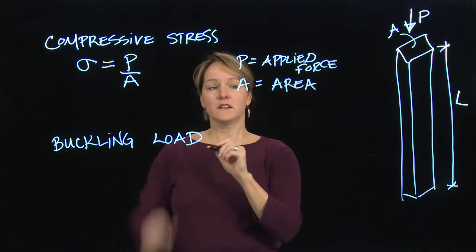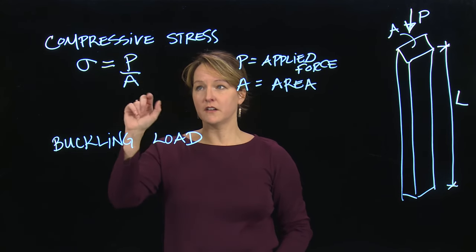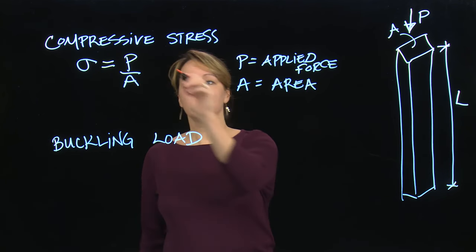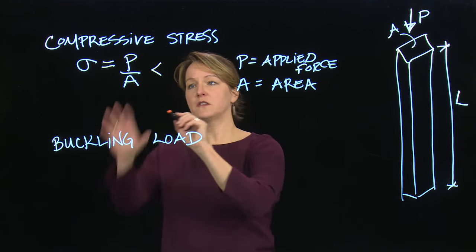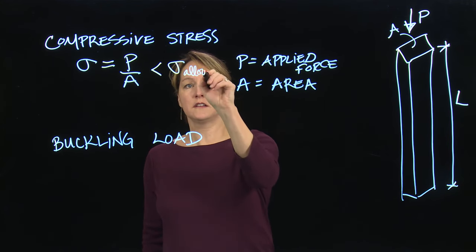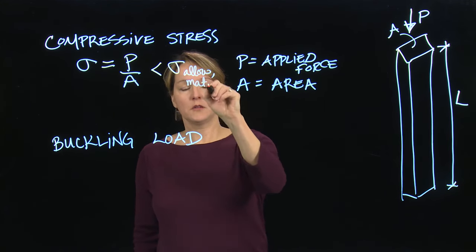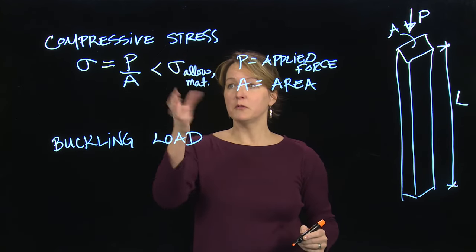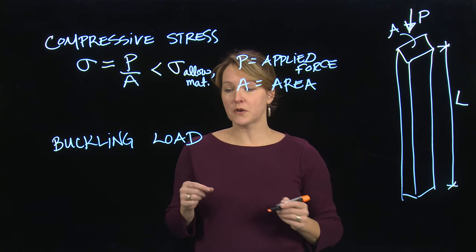We calculate this value. So for a given column, we'll typically know the cross-sectional area. And we'll know the applied force. And we'll know the material. Or we'll be designing the material. So I want to keep this stress less than the allowable stress of the material. So if we're dealing with steel, it would have a higher allowable stress than, say, wood. And we would play around with these numbers to make sure that it didn't fail in compression.